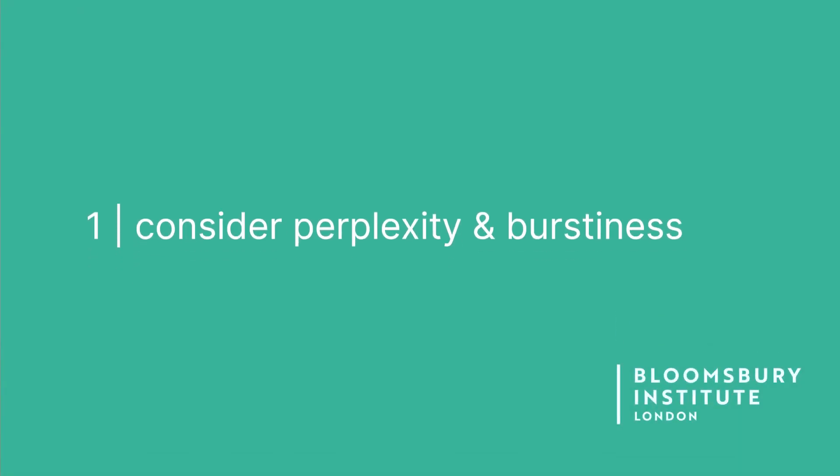Tip one is just to consider the perplexity and burstiness yourself while you're reading. Is it quite a flat tone? Are there lots of varied or unusual word choices that you're spotting? The more that a text is boring and drab, reading at a very flat tempo and pace with very little creativity or difference, the more likely it is that it was written by an artificial intelligence.